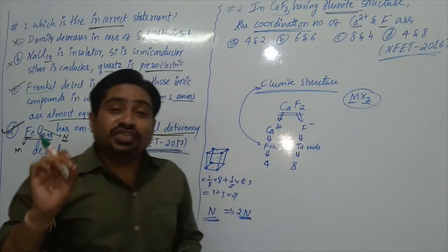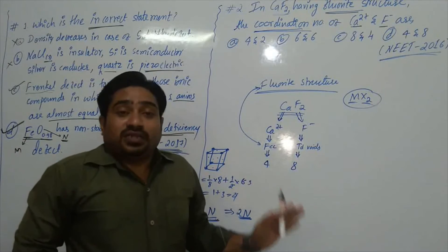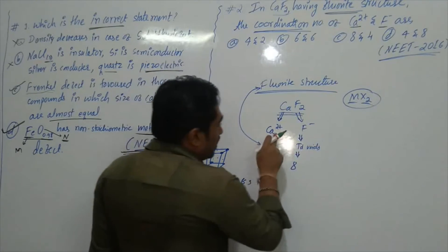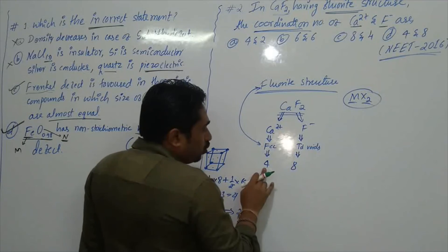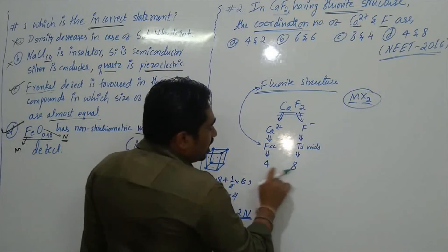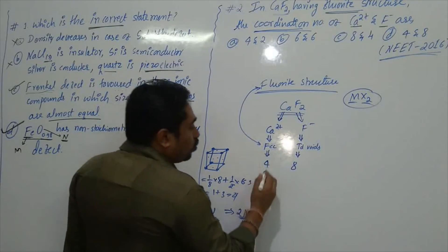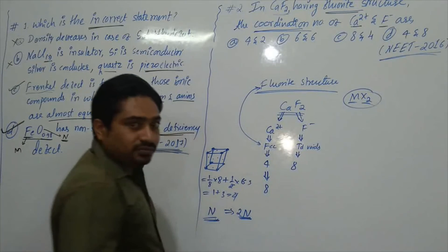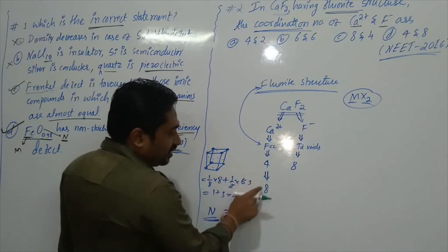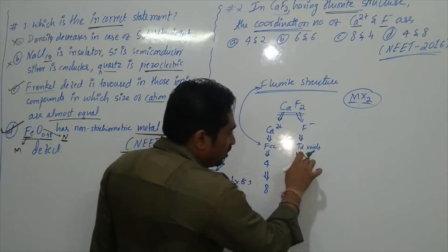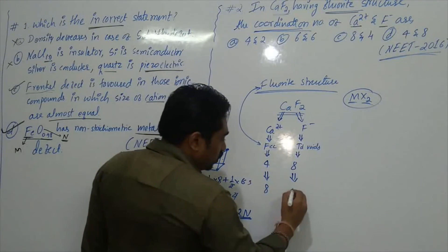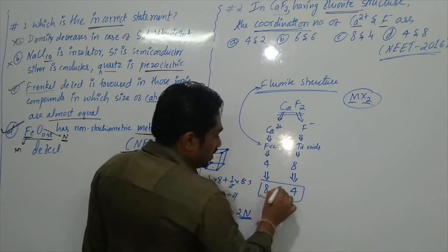Now we calculate the coordination number — the number of nearest neighbors or oppositely charged ions surrounding a given ion. Around one calcium ion, there are 8 fluoride ions, so the coordination number of calcium is 8. Around one fluoride ion, there are 4 calcium ions surrounding it, so the coordination number of fluoride is 4. The answer is 8 and 4.